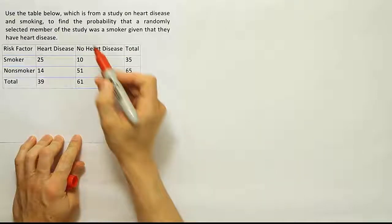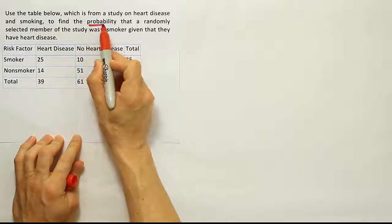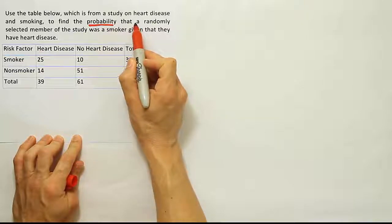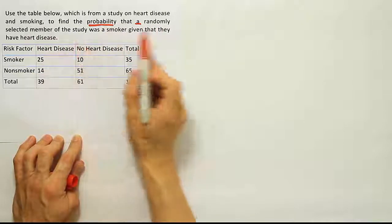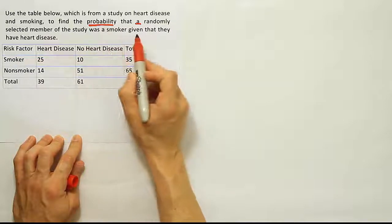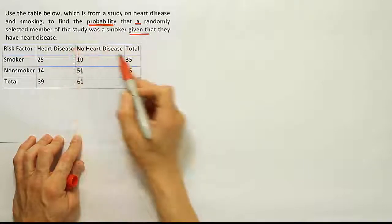So let's look at the key words for this problem. Find the probability, so we know we're working a probability problem, that a randomly selected member, so one member of the study, was a smoker given that they have heart disease.